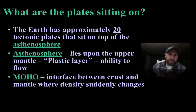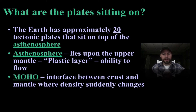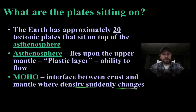The plates themselves — there are about 20 of them — and they're sitting on what's called the asthenosphere. The asthenosphere is this plastic layer of the mantle; it has the ability to flow or move rock. There's an interface between the asthenosphere and the crust that we call the Moho boundary, named after the scientist who identified it. What's important here is that the density suddenly changes. We were able to figure this out by looking at seismic waves — seismic waves change when they hit different densities, and from that we were able to see the different layers of Earth.